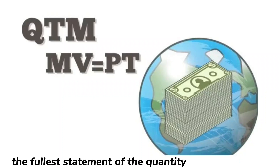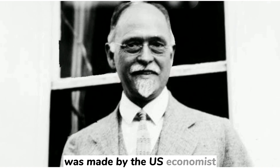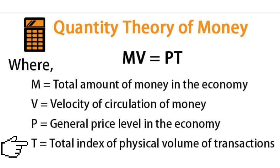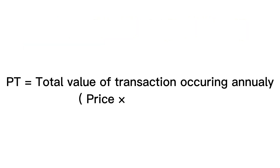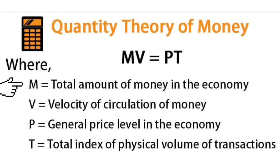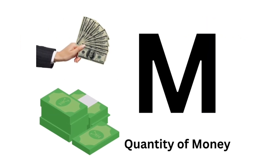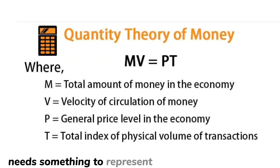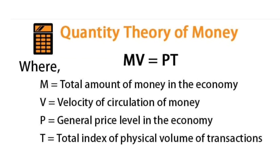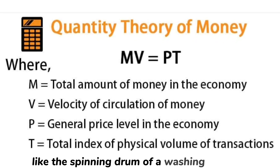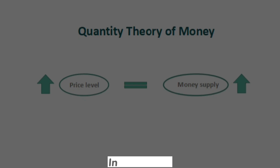The fullest statement of the quantity theory of money was made by the US economist Irving Fisher, who used the mathematical formula MV = PT. Here P is the general level of prices, and T is the transactions that take place in a year, so PT is the total value of transactions occurring annually. M is the supply of money, but because PT is a total flow of goods, while M represents a stock of money that can be used over and over again, the equation needs something to represent the circulation of money. This circular flow, which causes money to rotate through the economy like the spinning drum of a washing machine, is V, the velocity of money.